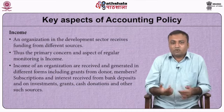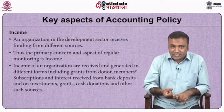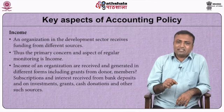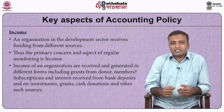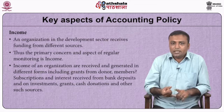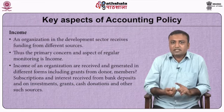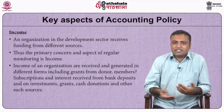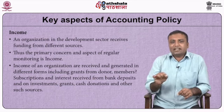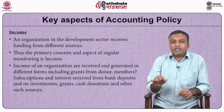Key aspects of accounting policy: the first is income. An organization in the development sector receives funding from different sources, so the primary concern and aspect of regular monitoring is income. Income of an organization is received and generated in different forms, including grants from donors, member subscriptions, interest received from bank deposits and investments, grants, cash donations, and other such sources. Some organizations also receive income through trainings imparted and the sale of materials produced through various activities.